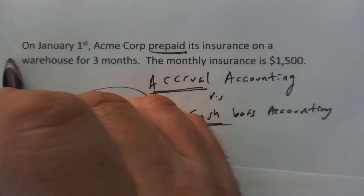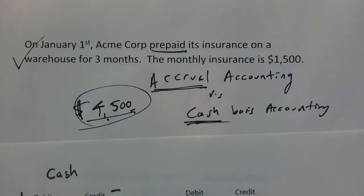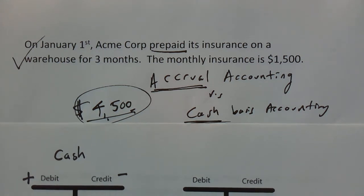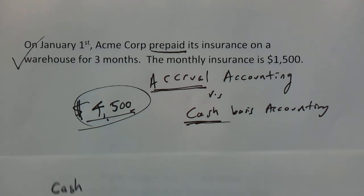So we're good with this first transaction — we could do that as a journal entry. There are some other videos where I get into detail about journal entries. I want to move on to what would happen at the end of the month.